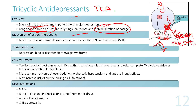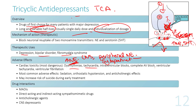Therapeutic uses of TCAs include depression, acute depressive syndromes in bipolar disorder, and fibromyalgia. Adverse effects include cardiac toxicity: because norepinephrine increases in both the CNS and peripheral nervous system, it can activate the sympathetic nervous system, causing dysrhythmia, tachycardia, AV block, ventricular tachycardia, ventricular fibrillation, and potentially death.